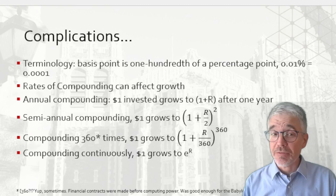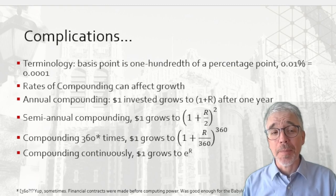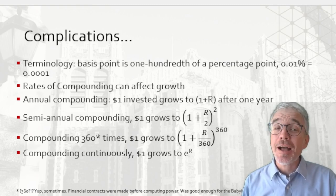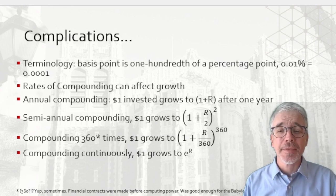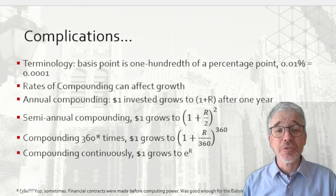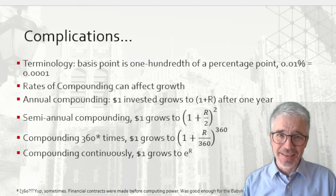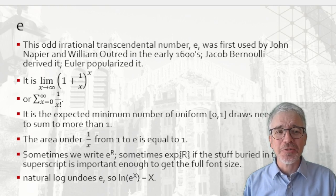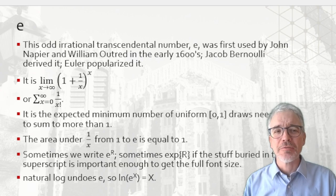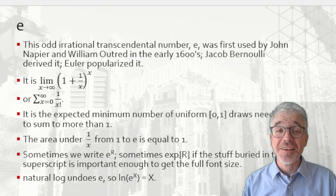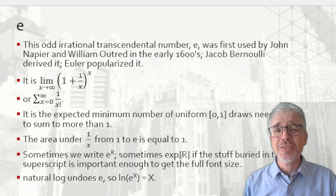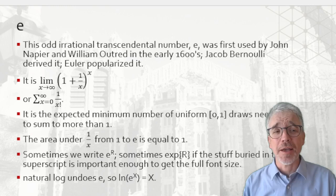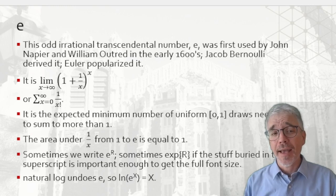You could even, here's some little math wizardry, compound an infinite number of times. That would converge to something involving the number E. I hope you remember that crazy number E. E is this odd, irrational, transcendental number first used by mathematicians John Napier and William Ohtred in the early 1600s. Jacob Bernoulli derived it. Euler popularized it. E is the limit of (1 + 1/x) to the x power as x goes to infinity.